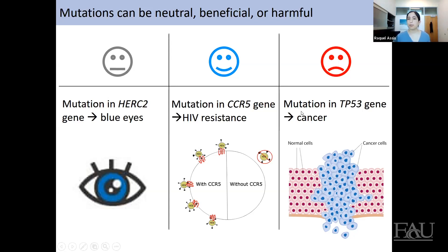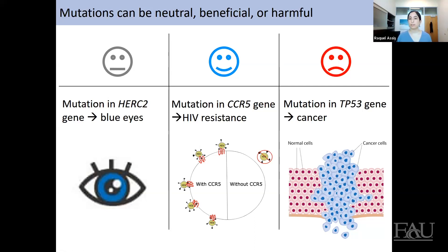A harmful mutation example is in the TP53 gene, which produces a protein that controls cell growth. Mutations in this gene can lead to many different types of cancers. During cancer, there is an over-proliferation of cells — the cancer cells accumulate because the old cells are not dying and we see a buildup instead of the normal cycle of losing old cells and replenishing them with new ones.